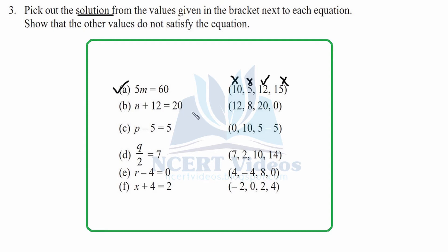We don't need to check the rest. Checking 20: 20 plus 12 is 32, not equal to 20. Checking 0: 0 plus 12 is 12, not equal to 20. For part c, placing 0 gives minus 5, not equal to 5, so we cross it. Placing 10: 10 minus 5 equals 5 — this is true, so 10 is the solution for that equation. The rest can be crossed without checking.